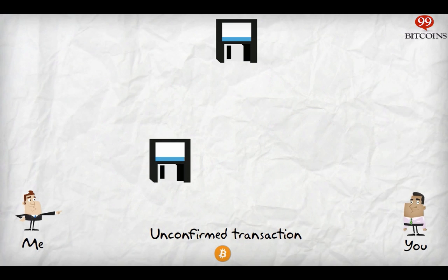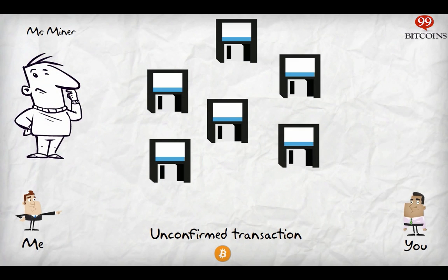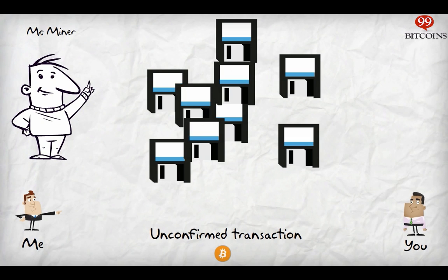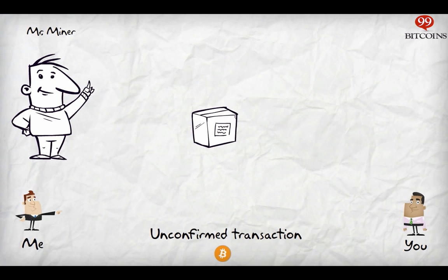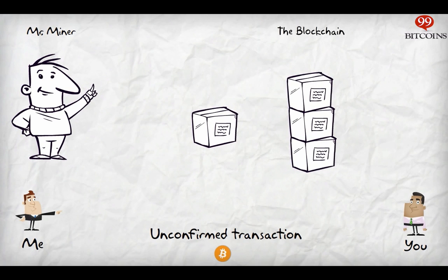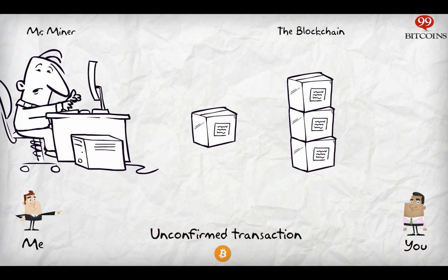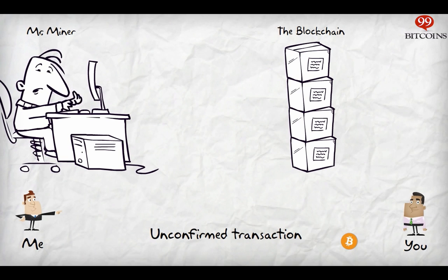Miners will gather this floating transaction file along with other unconfirmed files like it, and will need to order them in some way. This is important in order to prevent double spending, as explained in previous videos. First, the miners will group transactions together into what is known as a block. Afterward, they'll try to get the new block into the blockchain. Miners will use their super-powerful computers to solve a mathematical problem. The first miner to succeed in this will get his block into the blockchain and receive a bounty.